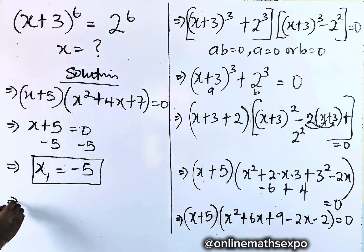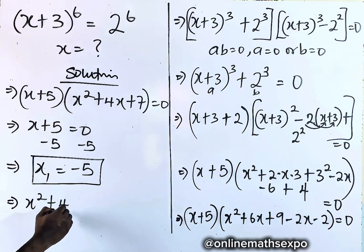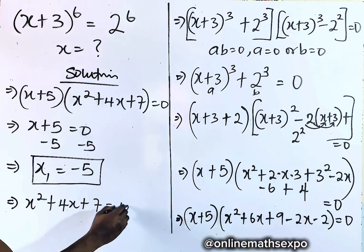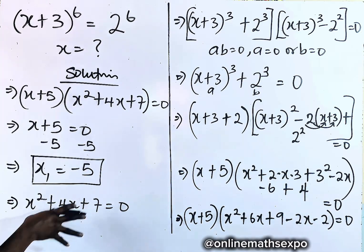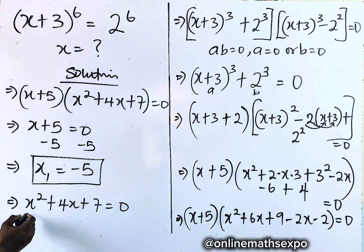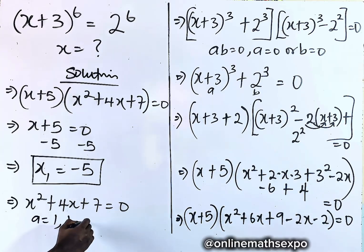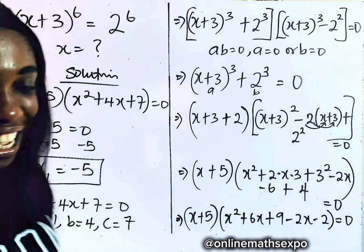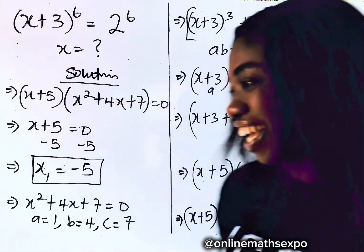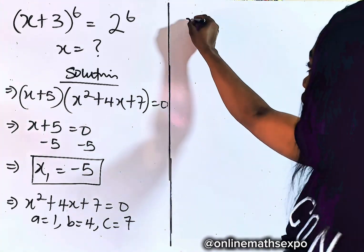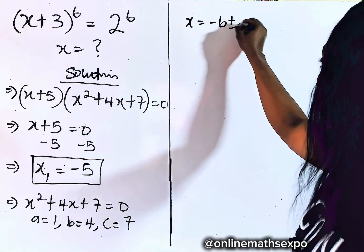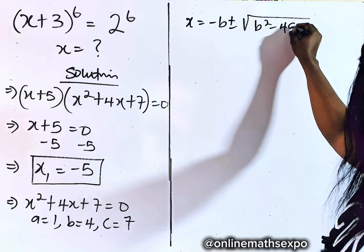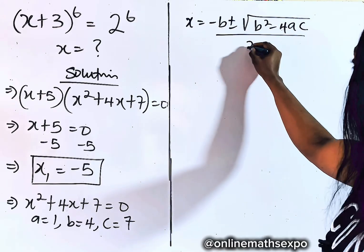Now let's solve the second factor: x² + 4x + 7 = 0. This is a quadratic equation, so we apply the quadratic formula. Remember that a is the coefficient of x², b is the coefficient of x, and c is the constant term. The formula is x = (−b ± √(b² − 4ac)) / 2a.